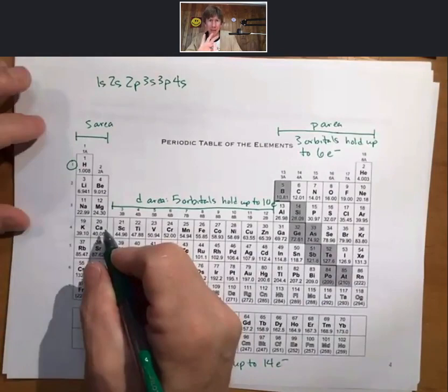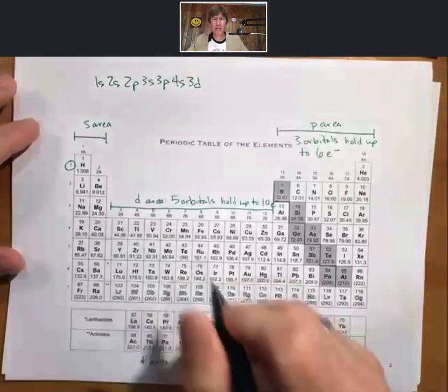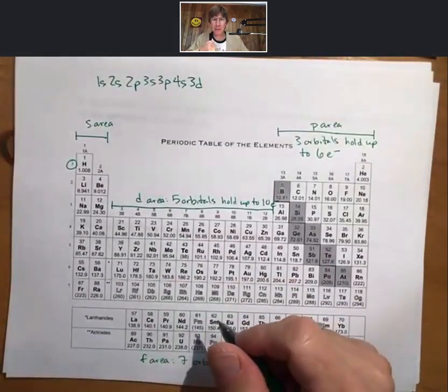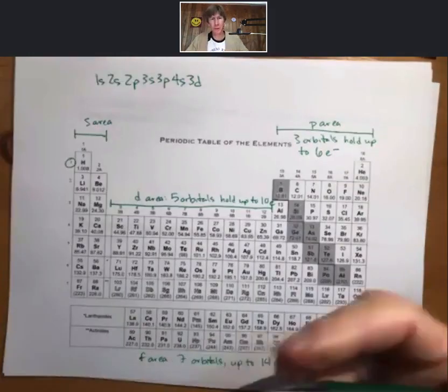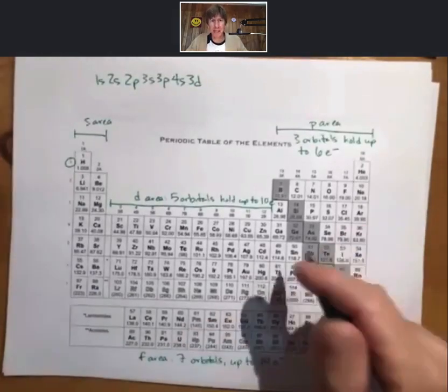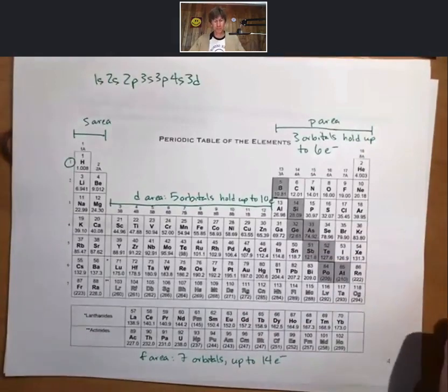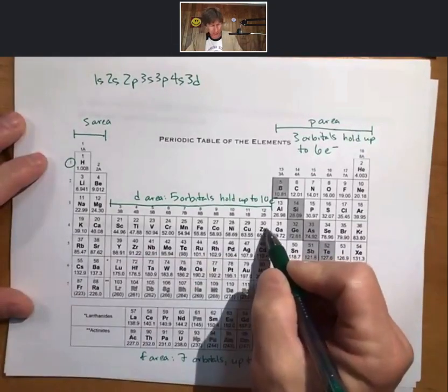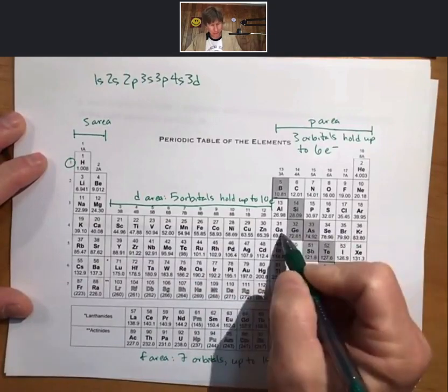We should do enough electron configurations, that you should remember that. 3d, now we're at zinc here, now we're in the p area, 4p. And if we come back to our picture here, 1s, 2s, 2p, 3s, 3p, 4s, 3d, just the tiniest bit higher is 3d, then 4p.